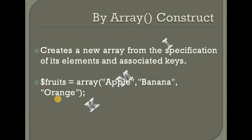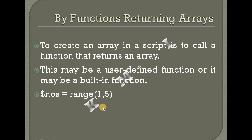The second method is by using the array construct. This creates a new array from the specification of its elements and associated keys. For example: $fruit = array('apple', 'banana', 'orange'). The third method is by calling a function that returns an array, such as $numbers = range(1, 5).